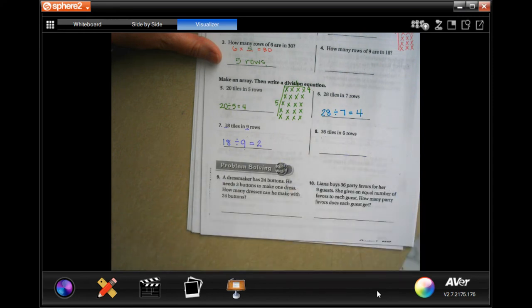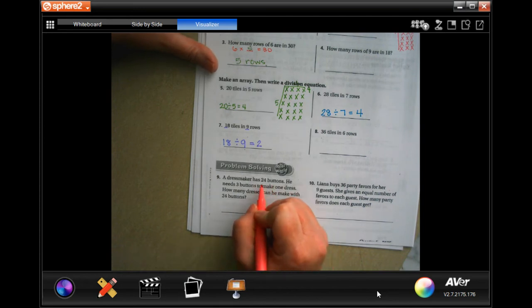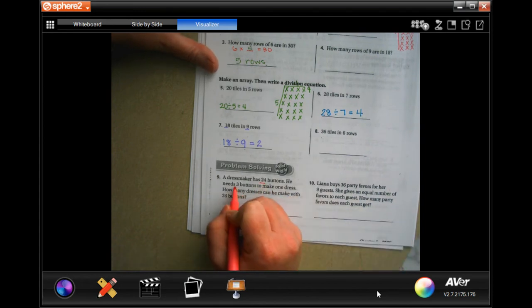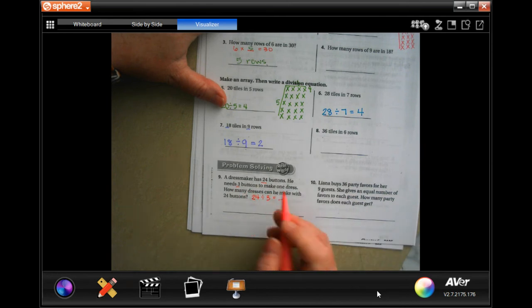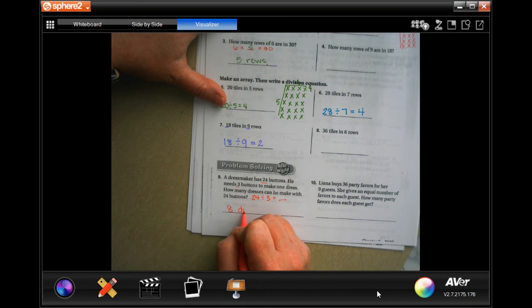Okay, the dressmaker has 24 buttons. He needs three buttons to make one dress. So 24 divided by three equals... well three times eight is 24. Eight dresses. How many dresses can he make?